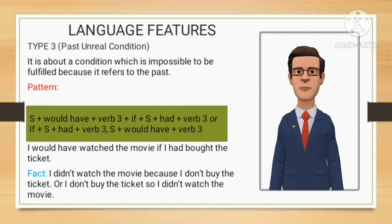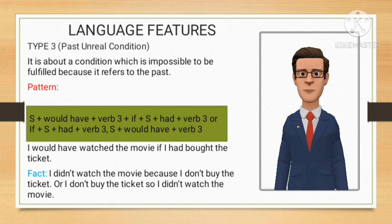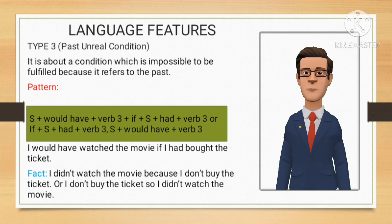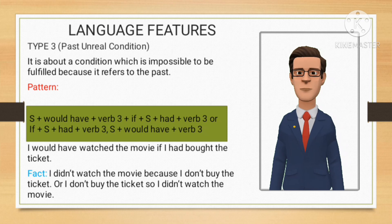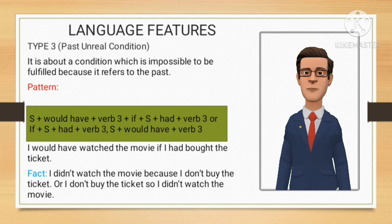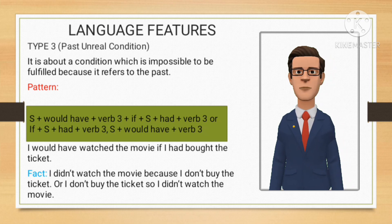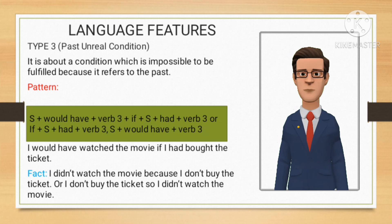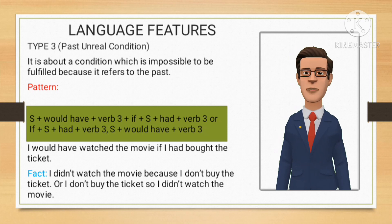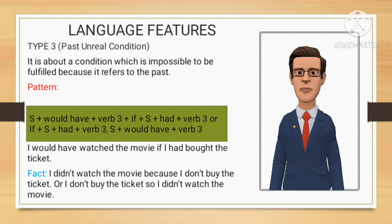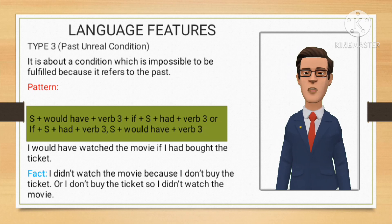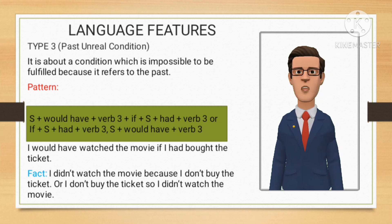Now, conditional sentence type 3. In this type, it states a condition which is impossible to be fulfilled because it refers to the past. The pattern: subject + would have + verb 3, if + subject + had + verb 3; or: if + subject + had + verb 3, subject + would have + verb 3. Example: 'I would have watched the movie if I had bought the ticket.' The fact: I didn't watch the movie because I didn't buy the ticket.